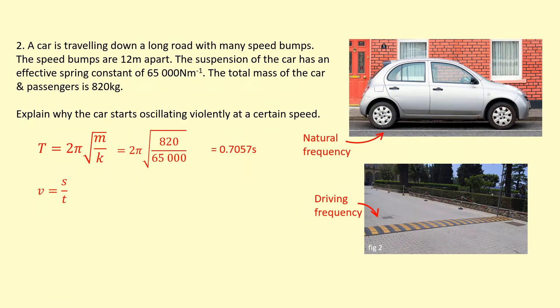So what I'm going to do is use the constant speed equation. I'm going to put the distance of 12 meters and make the car hit those speed bumps every 0.7057 seconds. So that's a speed of 17 meters per second.